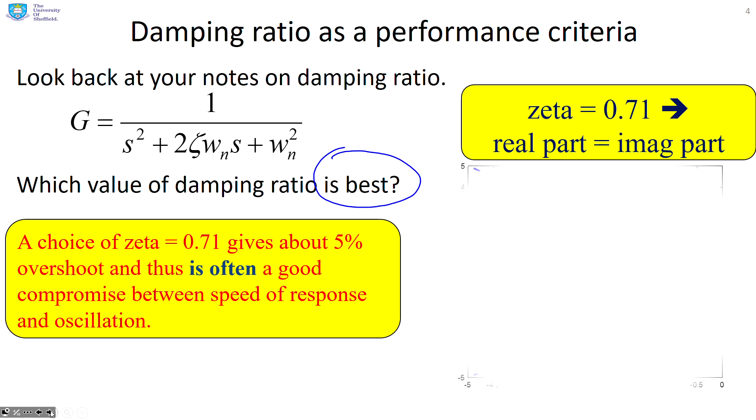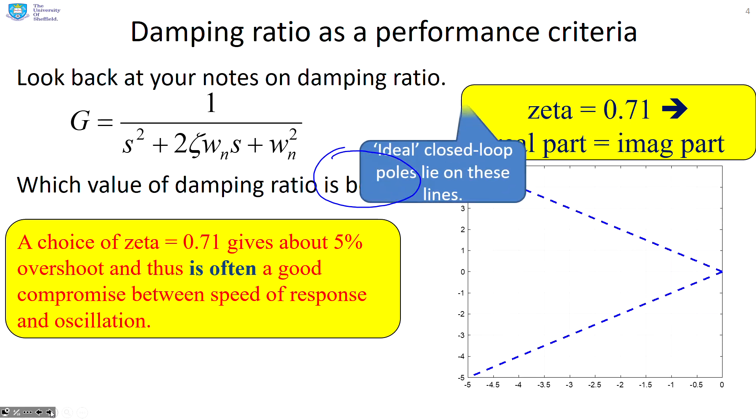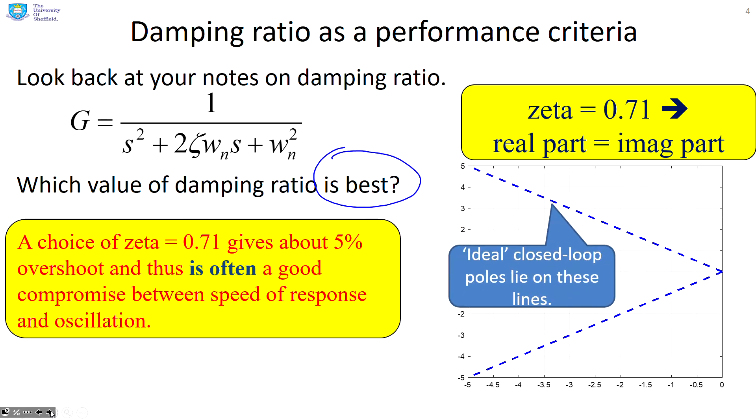Now, a value of zeta equals 0.71 is also really convenient because what it tells you is the real part and the imaginary part of the root have the same magnitude. So in other words, you can sketch these lines here of 45 degree angle. So it's very easy to identify that damping ratio.